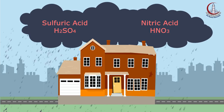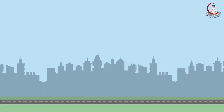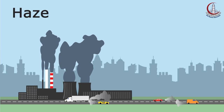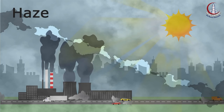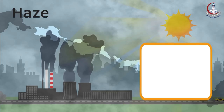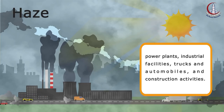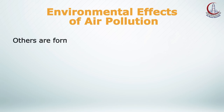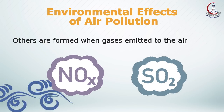Acid rain also speeds the decay of buildings and statues that are part of our natural heritage. Another environmental effect of air pollution is haze. Haze is present when sunlight encounters tiny pollution particles in the air, obscuring the clarity, color, texture, and form of what we see. Some haze-causing pollutants, mostly fine particles, are directly emitted to the atmosphere by sources such as power plants, industrial facilities, trucks, automobiles, and construction activities.